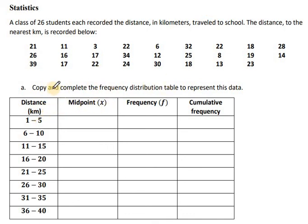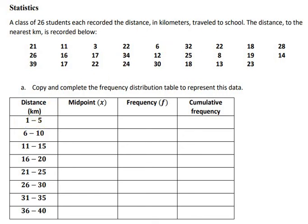Let's look at the table. We're told to copy and complete it. The first heading is distance in kilometers, the next heading is midpoint — that is, class midpoint — then frequency, and then cumulative frequency. Let's start with the class midpoint. These are the classes. In the first class we have a lower limit of 1 and an upper limit of 5.